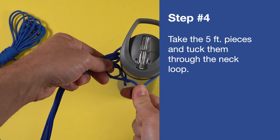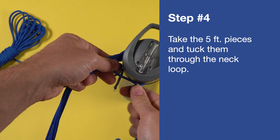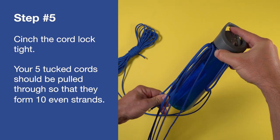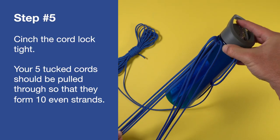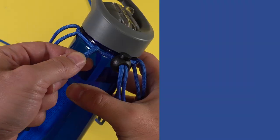Now take the five foot pieces and tuck them through the neck loop. Cinch the cord lock tight. Your five tucked cords should be pulled through so that they form ten even strands.